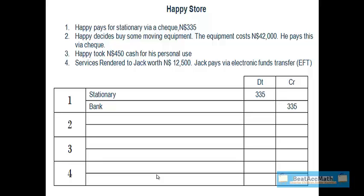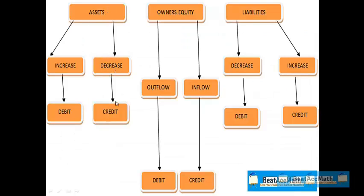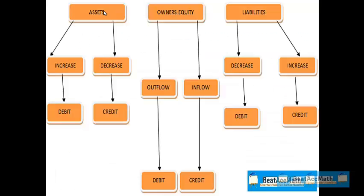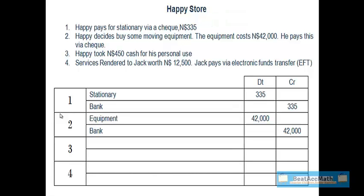Let's look at number two. Happy decides to buy some moving equipment. The equipment costs $2,000 and he pays with a check. From our first example, bank will have the same effect — assets decrease, resulting in a credit of the bank account. Happy buys equipment, which is an asset. Looking at our accounting equation map, if an asset increases then we should debit that account. So our answer will look like this: Debit equipment $42,000 and credit bank $42,000.